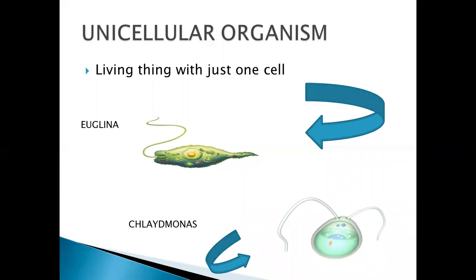We need microscope to visualize them. Few examples are euglena and chlamydomonas. There are other examples of unicellular organisms which are amoeba, paramecium and some others.